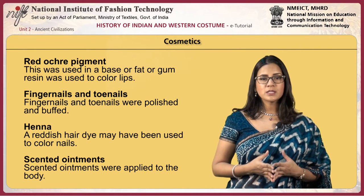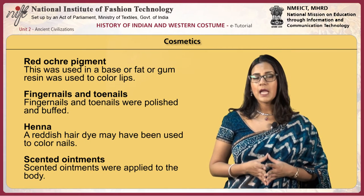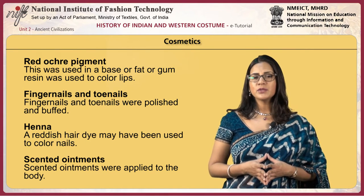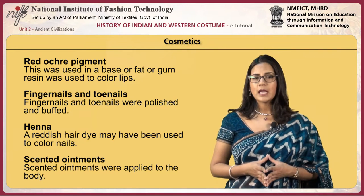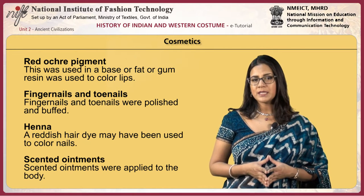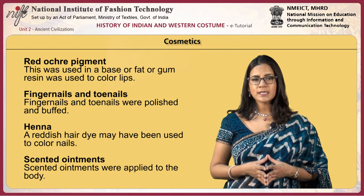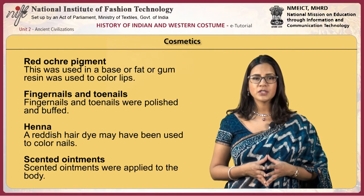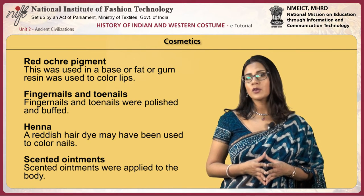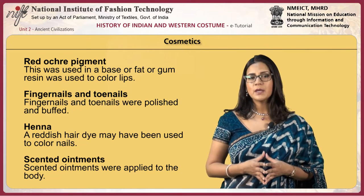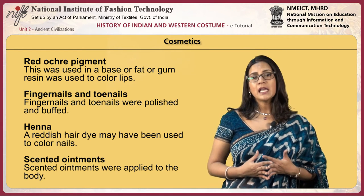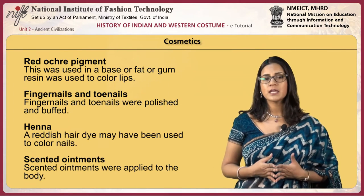Fingernails and toenails were polished and buffed. Henna, a reddish hair dye, may have been used to color nails. Scented ointments were applied to the body. Eye paint had cosmetic, symbolic and medicinal functions. Eye paintings represented the eye of the god Horus, considered a powerful charm, and the line formed around the eye helped to protect against the glare of the sun.